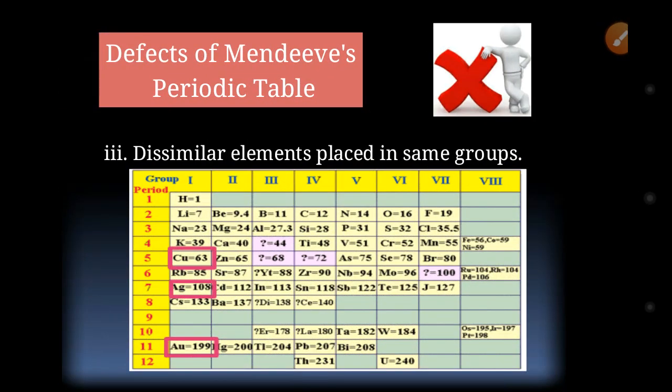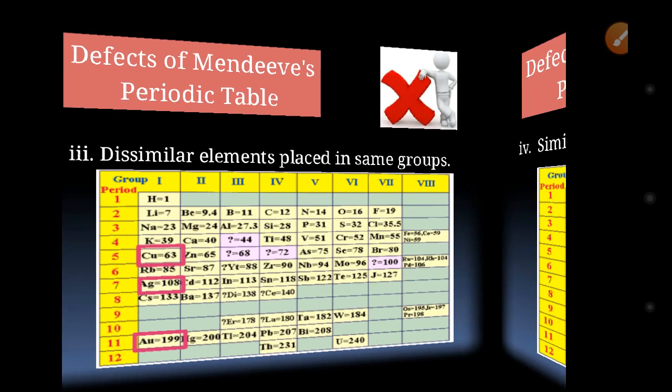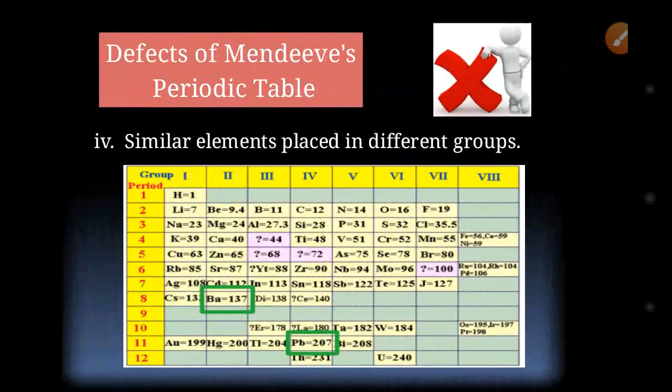The third defect was that dissimilar elements were placed in the same group. For example, copper, silver, and gold were placed in Group 1A along with lithium, sodium, and potassium, despite having very different properties. Conversely, similar elements were placed in different groups — for example, barium and lead, which have similar properties, were grouped into different groups.